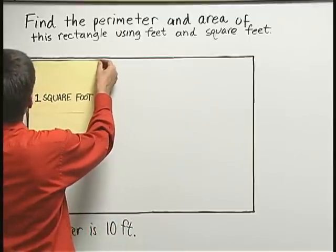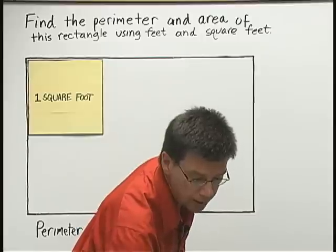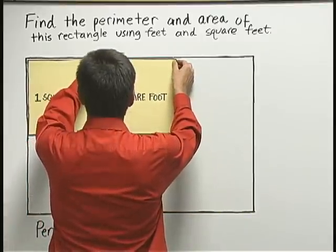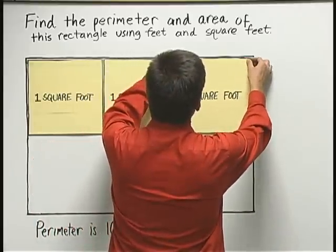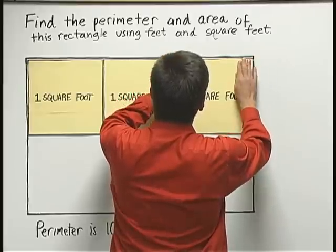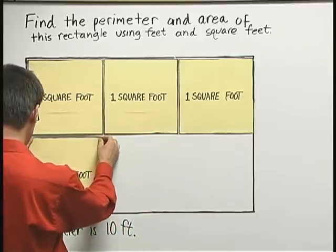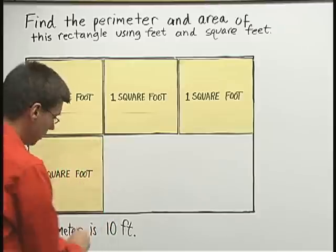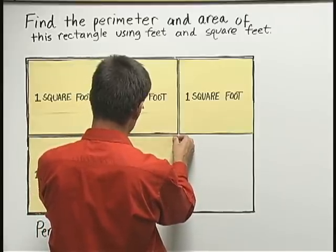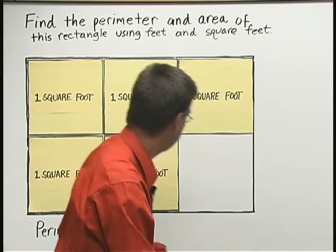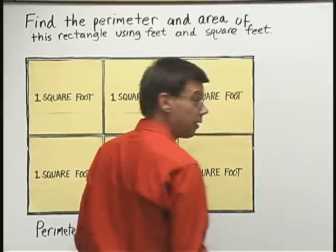I can place one square foot right up in this corner, and another square foot right next to it. Here's another square foot — so far that's one, two, three square feet. Here's a fourth one, and a fifth square foot. And it looks like I can fit one more square foot in my rectangle. Here's a sixth square foot.